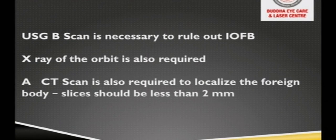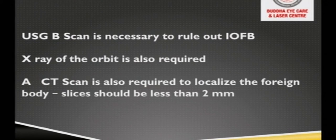For investigations, ultrasound B-scan is necessary to rule out intraocular foreign body, assess the amount of hemorrhage, and determine whether the patient has developed retinal detachment after trauma. X-ray of the orbit is also required. CT scan is always a must for those cases, and slices should be not less than 2 mm to pick up the smallest foreign body in the eye.